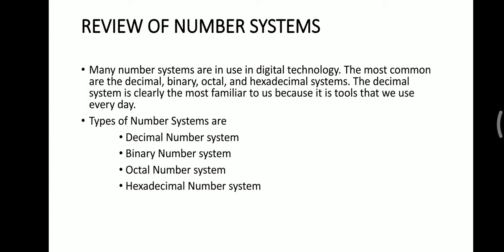In this review of number systems, the topic is mainly classified into four types. The number system can be used in digital technology, and the most common are the decimal, binary, octal, and hexadecimal number systems. The types are: decimal number system, binary number system, octal number system, and hexadecimal number system.